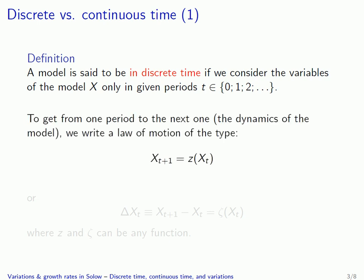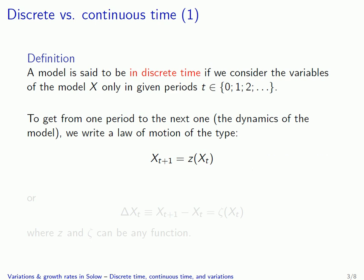In this kind of model, if we want to know what happens, we only need to describe the way in which the different variables evolve between period t and the next period t plus 1. So the only thing that we need to write is a law of motion that gives you x at time t plus 1 as a function — any function z of what you had in period t, so z of x_t.